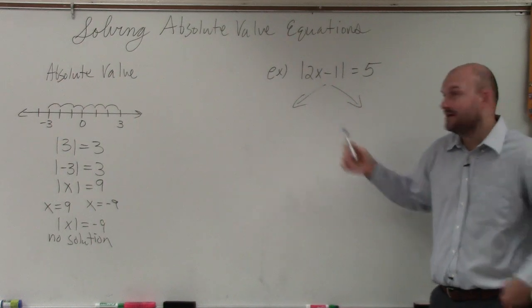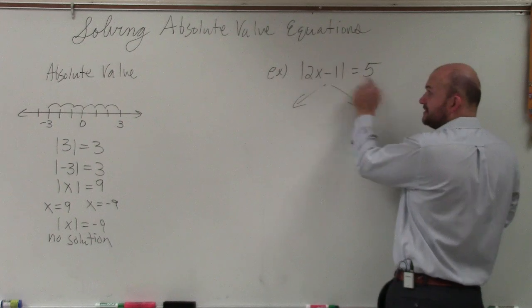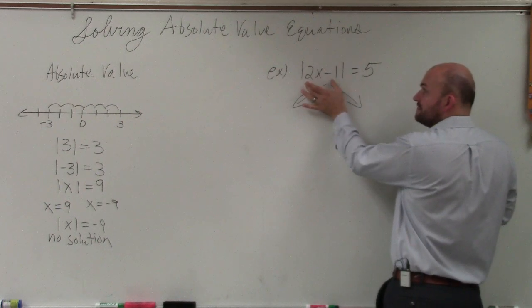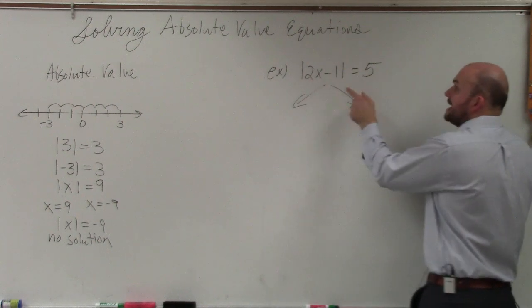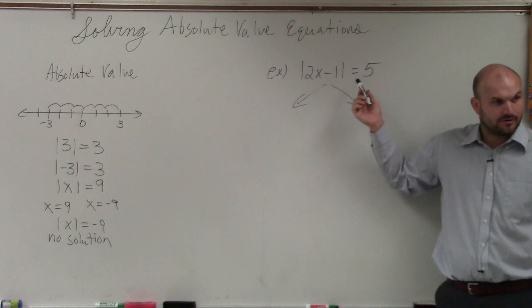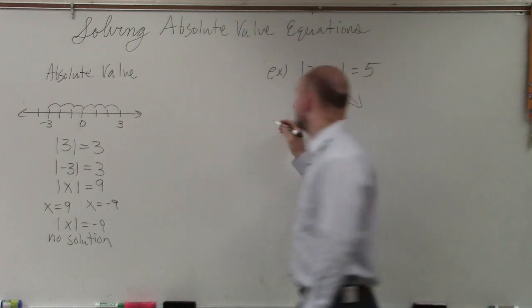Does that make sense? If we can solve for the value that makes this positive 5, it's going to equal 5. If we can solve for the value that makes this negative 5, the absolute value is still going to equal 5. Everybody agree? So what we do is create two cases.